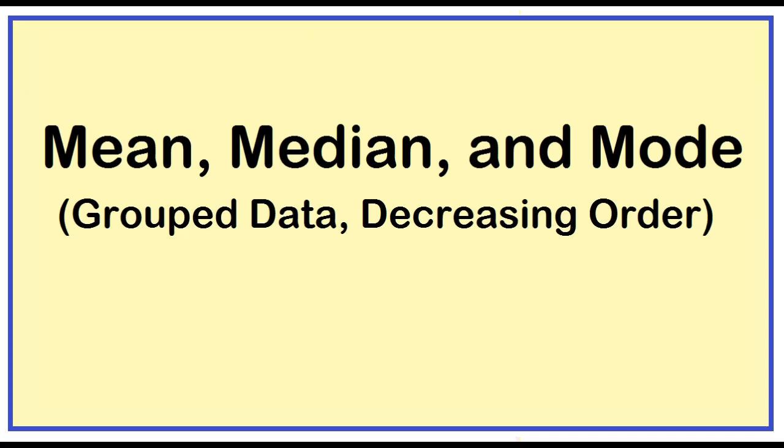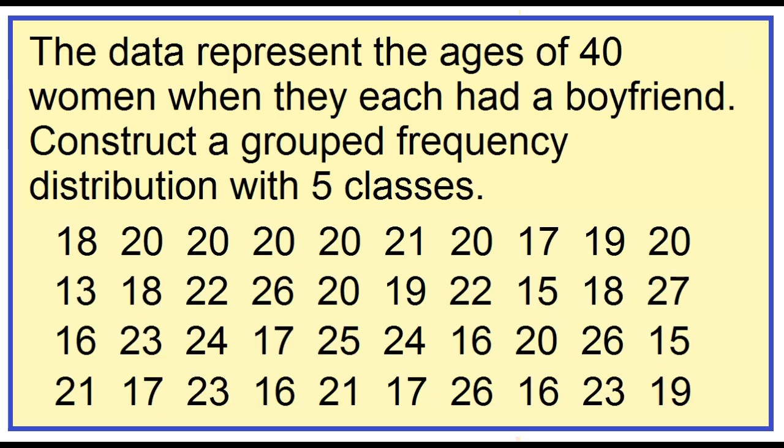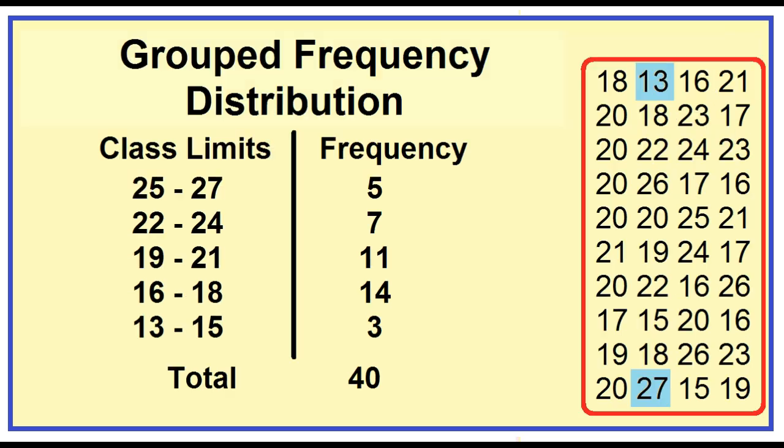How to find the mean, median, and mode given a group data in decreasing order? The data is all about the ages of 40 women when they each had a boyfriend. Based on the group data, find the mean, median, and the mode.